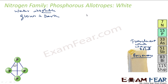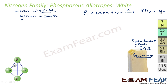White phosphorus dissolves in boiling sodium hydroxide solution. If you take P4 and add it to a sodium hydroxide solution with some water at high temperature, you get phosphine and NaH2PO2, which is sodium hypophosphite.